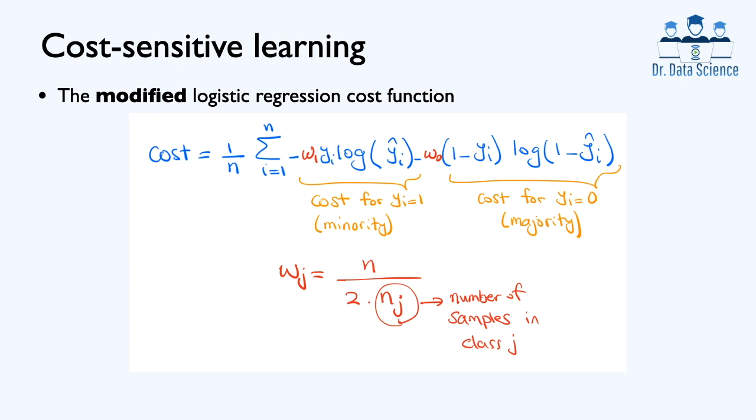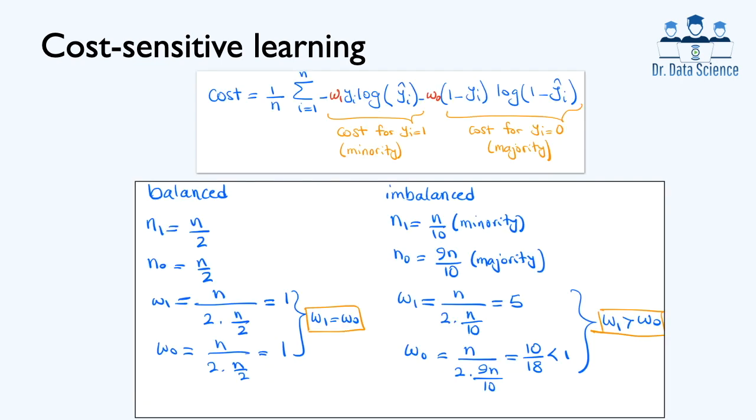Next, you will see how using these two class weights can help the machine learning algorithm to pay more attention to the underrepresented class. To see the difference, let's first look at the case of balanced dataset.